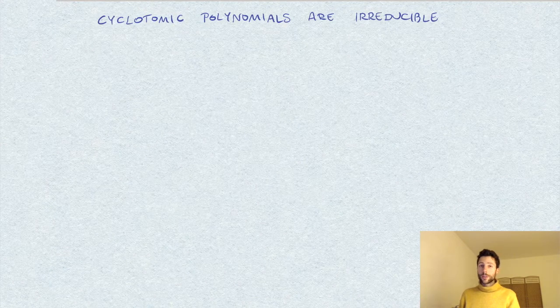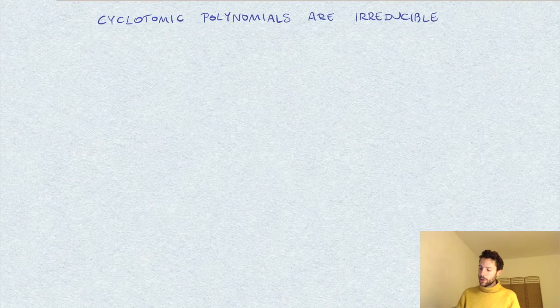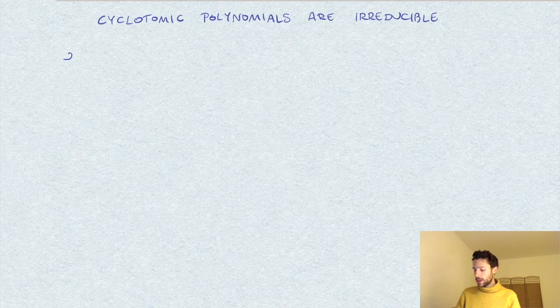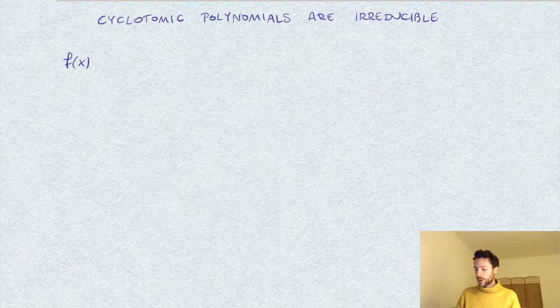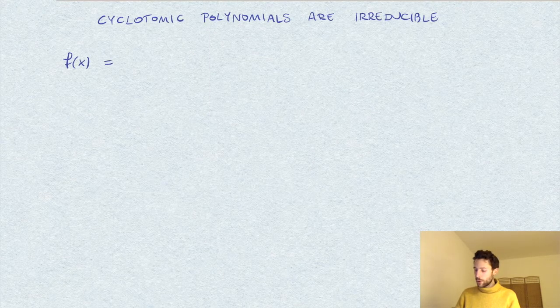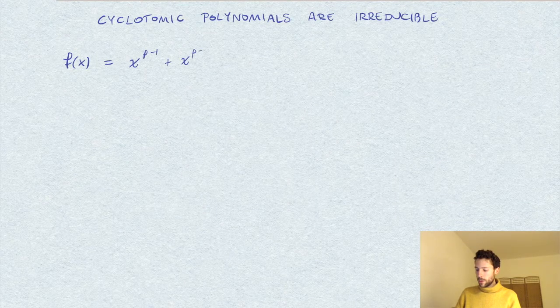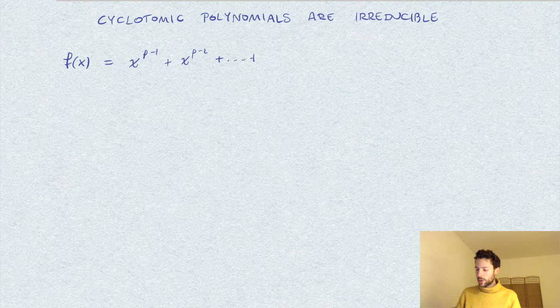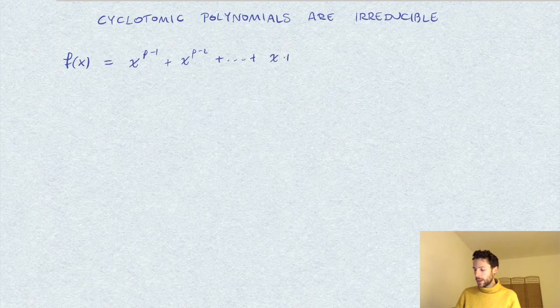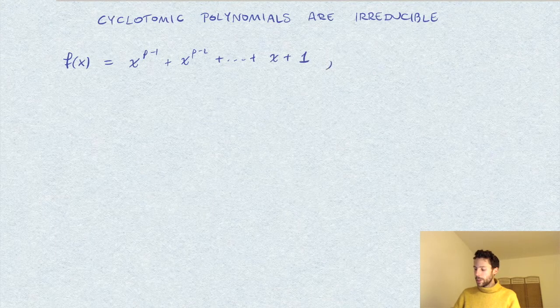Okay, so let's prove that cyclotomic polynomials are irreducible. That means polynomial f of x of the following form: x to the power p minus 1, plus x to the power p minus 2, and so on, plus x plus 1, where p is a prime.